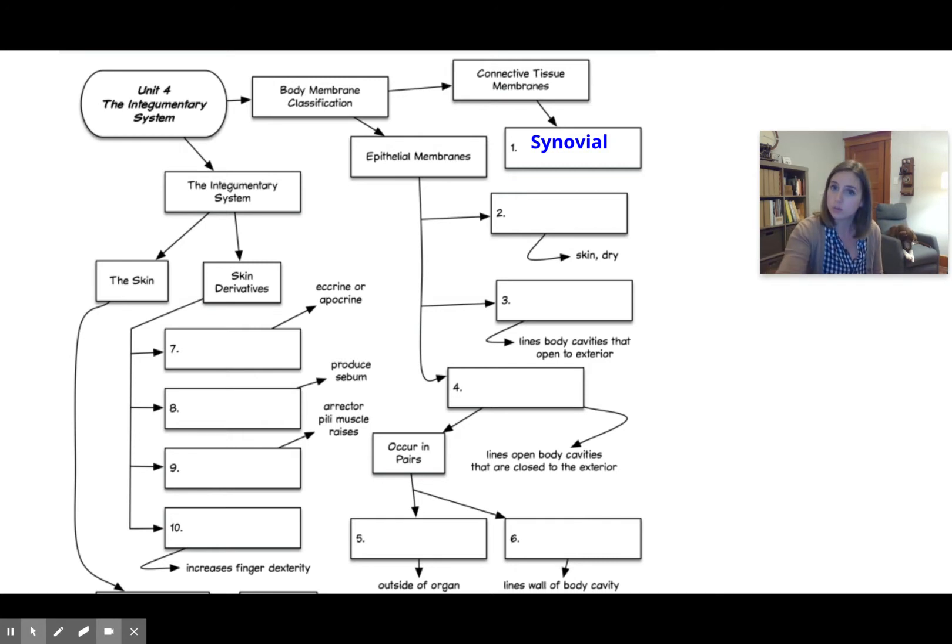Then we have the one that lines the body cavities that open to the exterior, meaning your holes. What membrane is that, you say? Mucous, of course. And then the fourth one is the one that lines the body cavities that are closed to the outside, and so these would be your serous membranes.